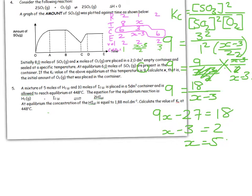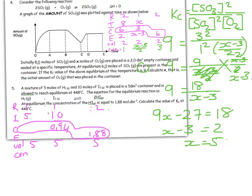Next one: A mixture of 5 moles of hydrogen and 10 moles of iodine are placed in a 5 dm³ container and allowed to reach equilibrium. The concentration of HI is 1.88 mol/dm³. Remember there is a link: 1:1:2 as 1.88 is to 2, so 0.94 and 0.94.